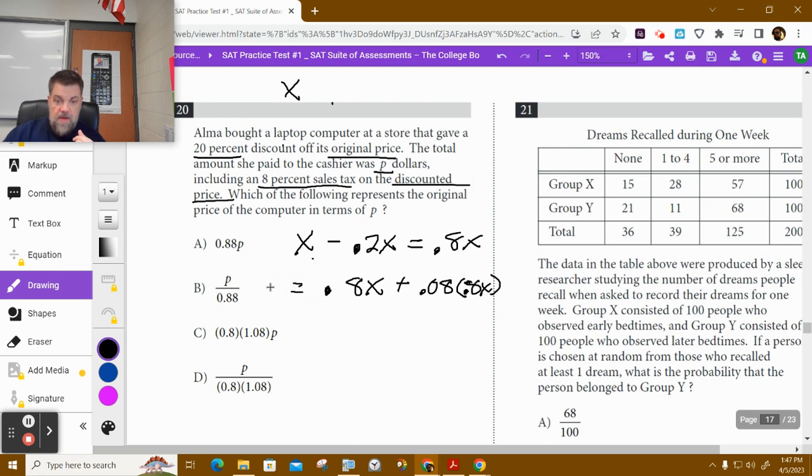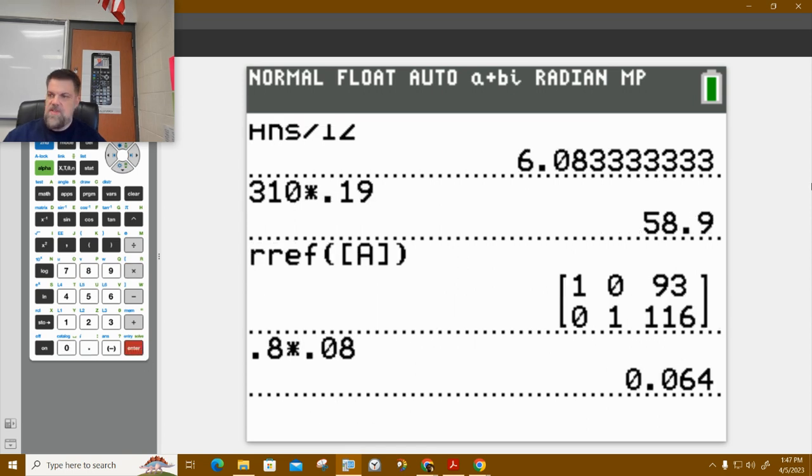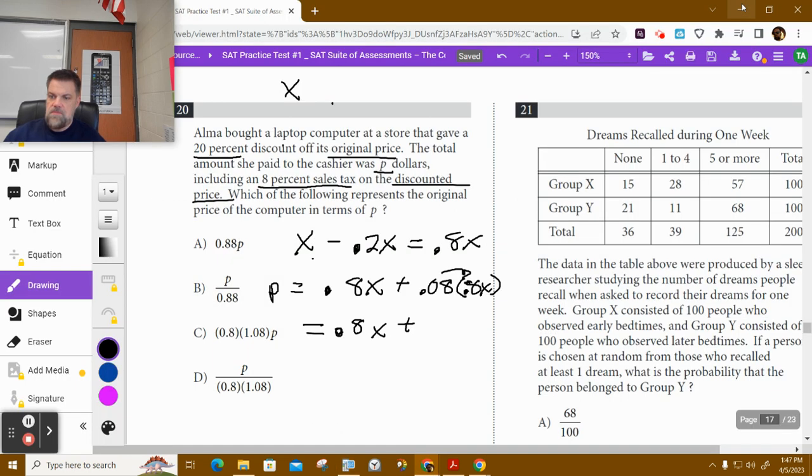So that would be p, but now I just got to clean up all these x's. So when I multiply this through, I've got equals 0.8x, and then this would be, what's 8 times 0.008... so 0.8 times, I know it's 64 or something, but yeah, 0.064.